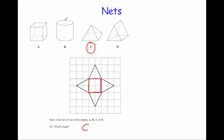You can clearly rule some of them out. You can rule out the cylinder because the cylinder's got a circle and this net doesn't have a circle. You can rule out the cube because your cube's got six squares — this clearly doesn't. And you can rule out the triangular prism because a triangular prism would have two triangles and three rectangles. As you can see, this has got the square and the four triangles needed for a square base pyramid.